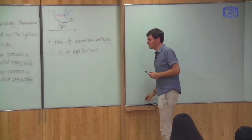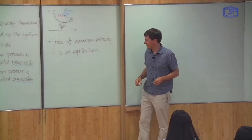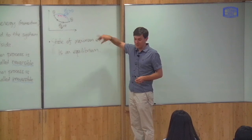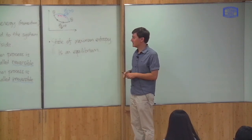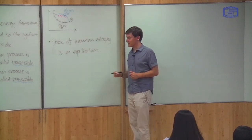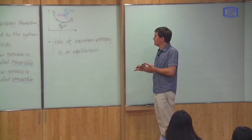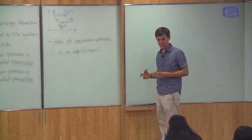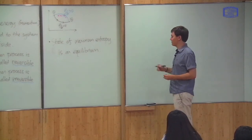So I've defined what entropy is and why it's important. Firstly, it's a state property — the path doesn't matter. Secondly, the second law of thermodynamics says that the entropy must always increase. Now I want to look at a series of examples to develop this concept of entropy some more.